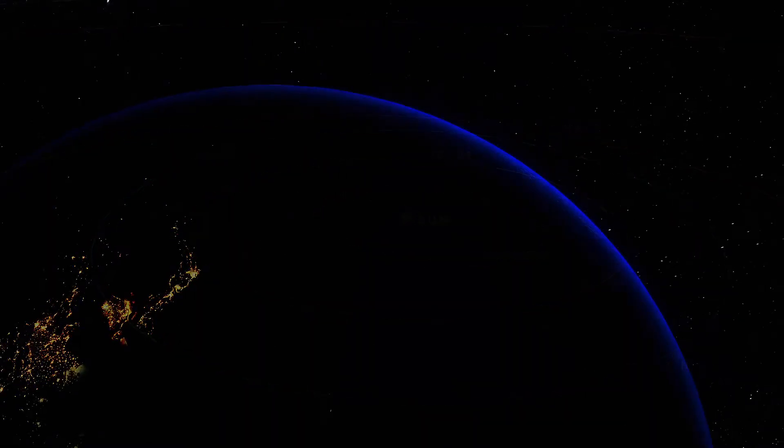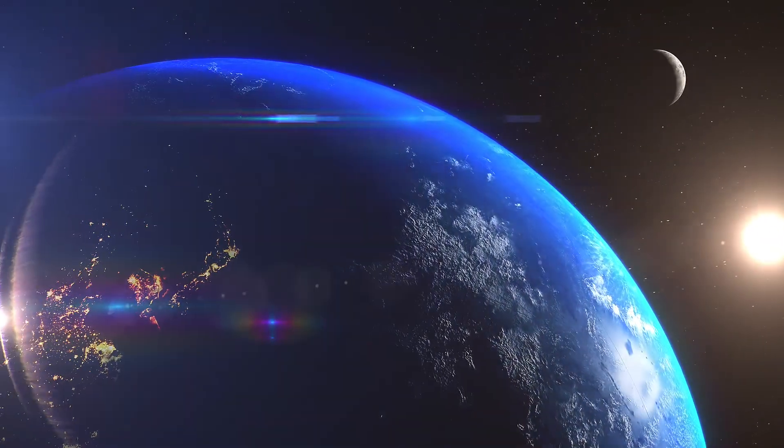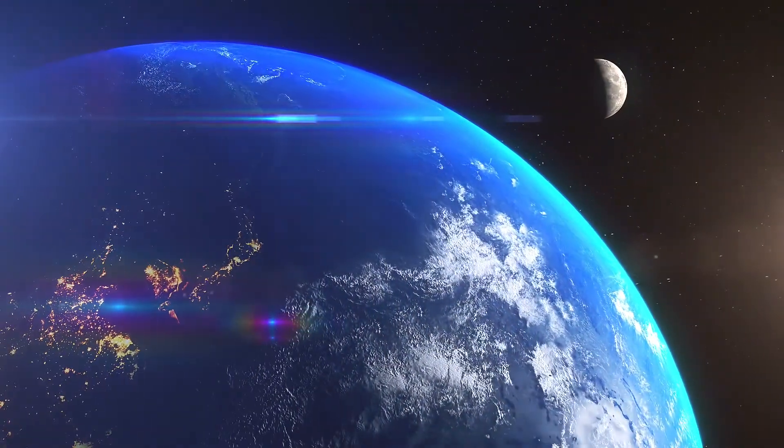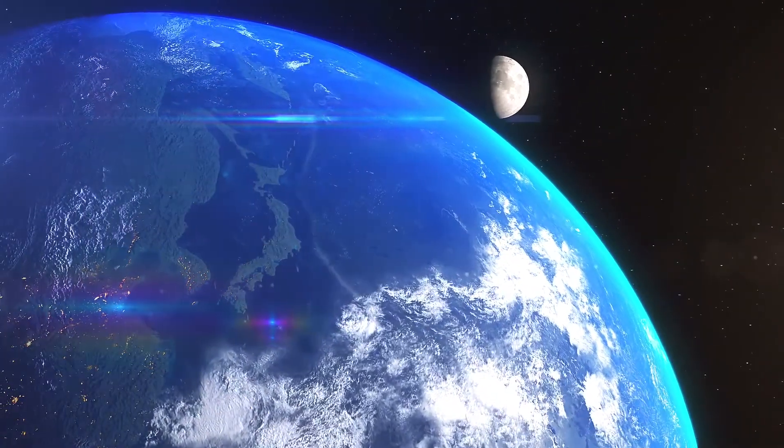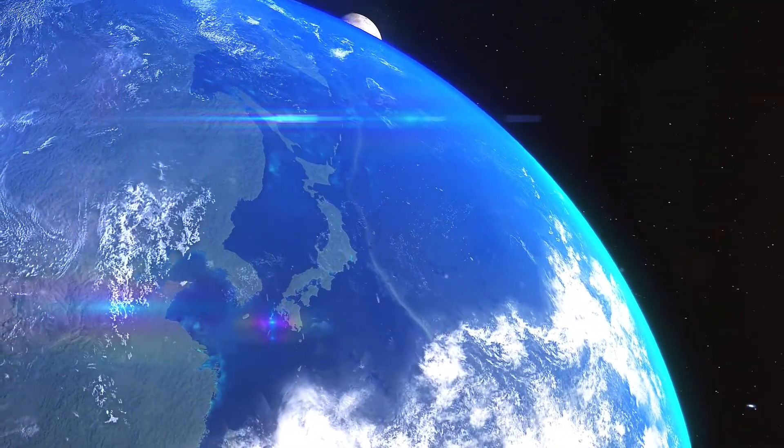One additional factor to consider is that the Sun is the main source of light in our solar system, and it is this light that gives us day and night on Earth, and also causes us to see the phases of the Moon each month.